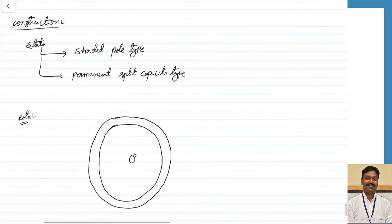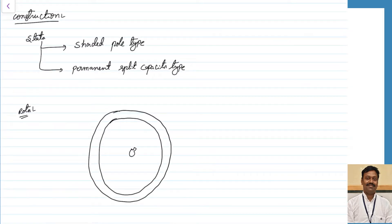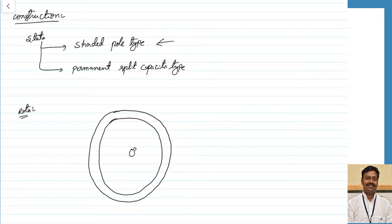Now let us see the construction. The stator can be similar to that of a single phase machine or a three phase machine. Either you can go for three phase balanced winding, which produces a three phase rotating magnetic field — then it is called a three phase hysteresis motor. If you want to operate on single phase, as is the case in most applications, we can go for either shaded pole type or permanent split capacitor type.